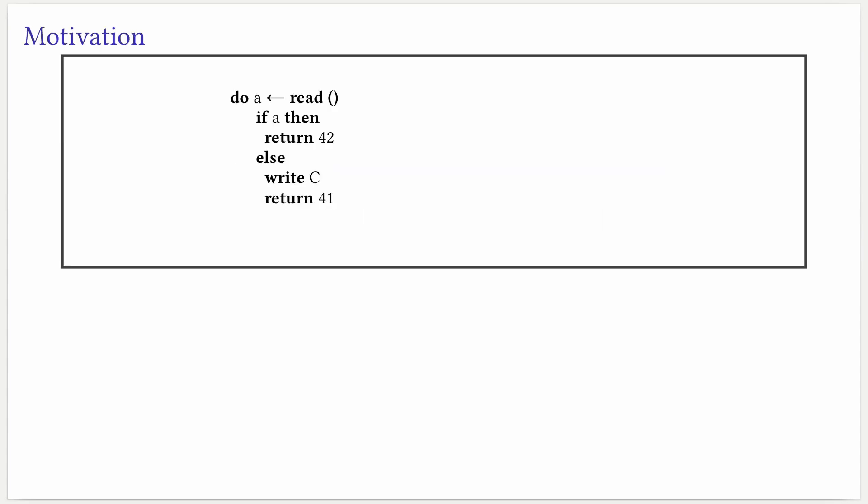Imagine we have a program like the one on the left. This program represents a computation that can perform two kinds of effects: either it can read from the environmental boolean, or it can write either A, B, or C. In order to execute this kind of computation we need a machine that provides the implementation of the effects. So let's suppose we have a machine like the one on the right, which is on some state y0. Let's see these two components interact.